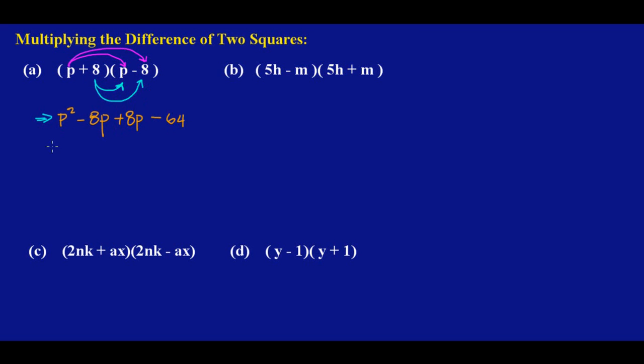Now I can go ahead and simplify my like terms. I have like terms here, so I have a negative 8p plus 8p, so both will cancel out each other. 8p minus 8p leaves us with a zero, so what I have here essentially for my answer is p squared minus 64.